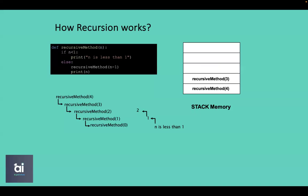As a next step, the system calls the recursive method with parameter 3 from the stack, and this prints 3 as output. After executing, the recursive method with parameter 3 is popped out of stack memory. Finally, the last method from the stack — recursive method with parameter 4 — is called, and after the recursive method with parameter 3 has output 3, it prints n which is 4. Then the recursive method with parameter 4 is popped out of stack memory.